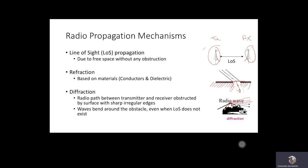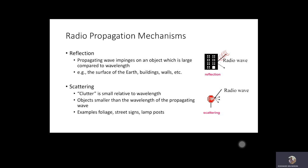The fourth propagation mechanism is reflection, which occurs when a wavelength hits a very large object. For example, a 2G wavelength at 800 to 900 MHz is approximately 30 to 40 centimeters, and when it hits a large building it encounters reflection. The fifth mechanism is scattering — when that same wavelength hits a smaller object like a street sign, it causes scattering of the RF signal.